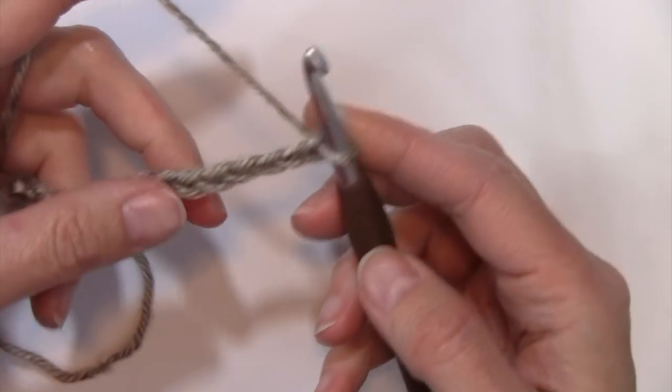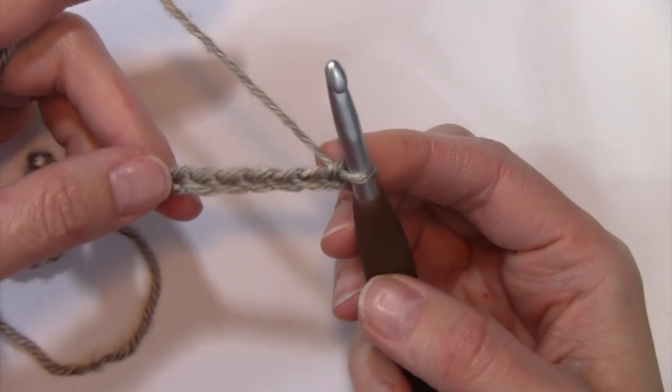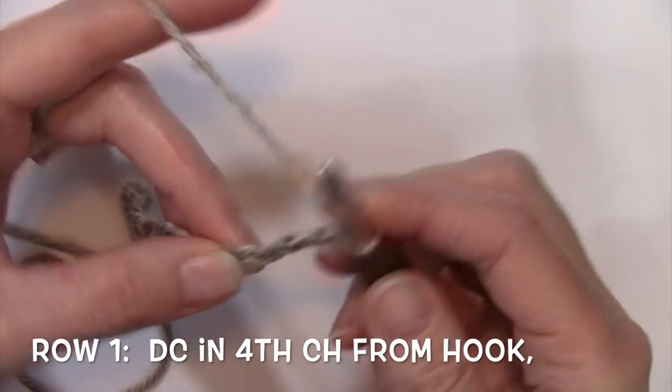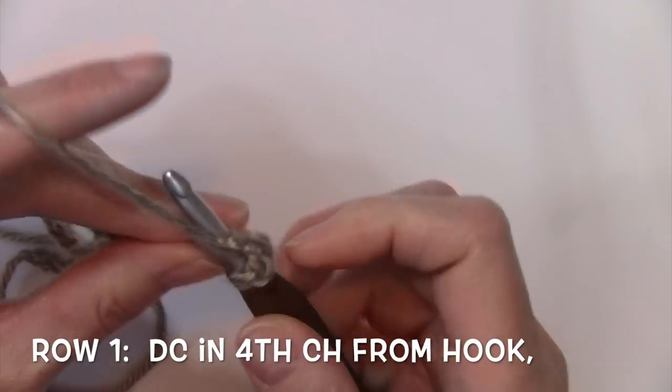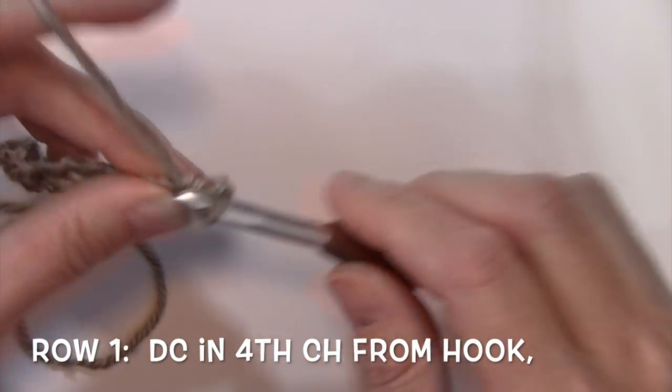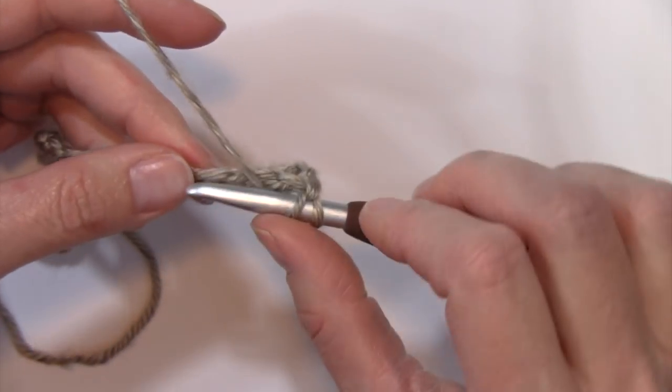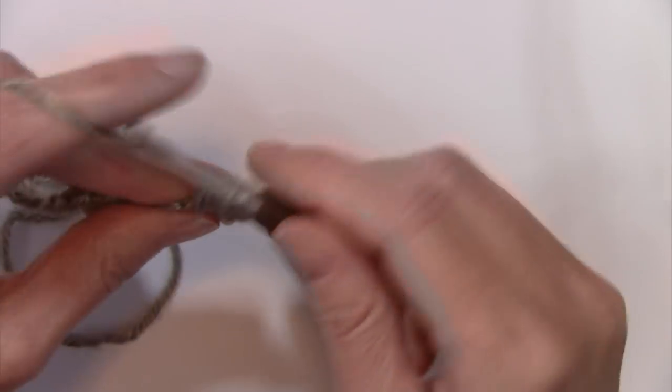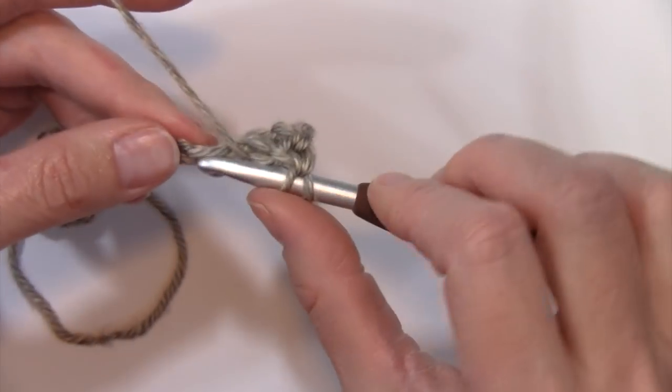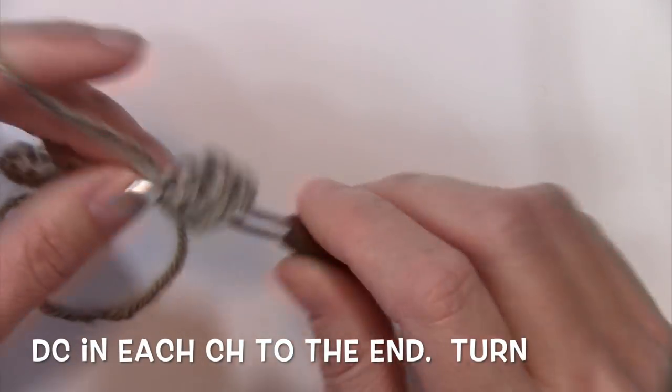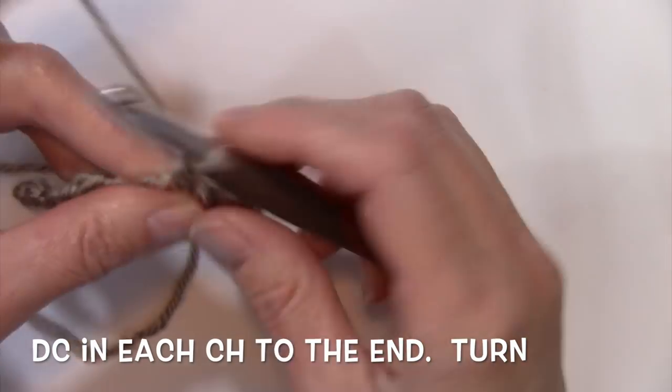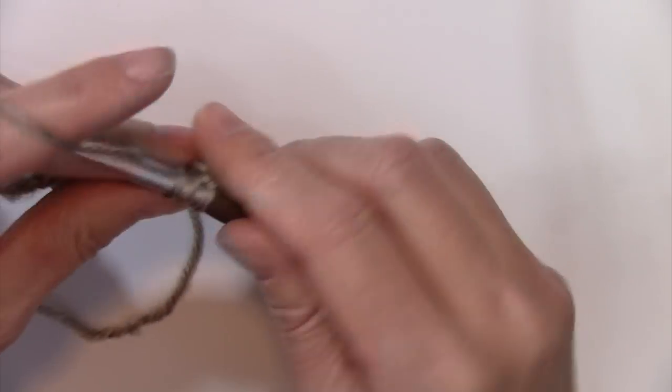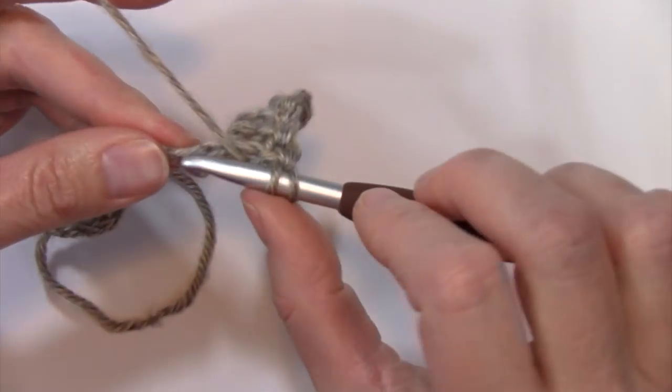So for row one you're going to double crochet in the fourth chain from the hook. One, two, three, and four. Those skipped chains will count as your first stitch, and then you're going to just simply work a double crochet in every chain to the end of your chain, however long your chain might be. So just continue on working that double crochet throughout the end of your chain.